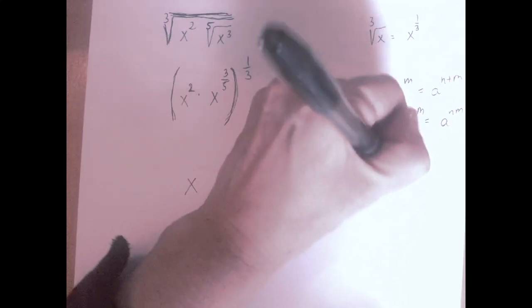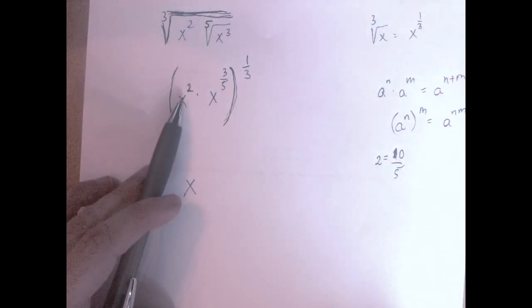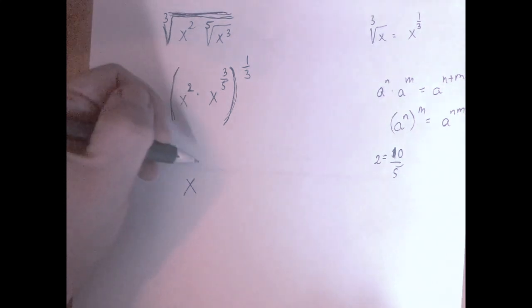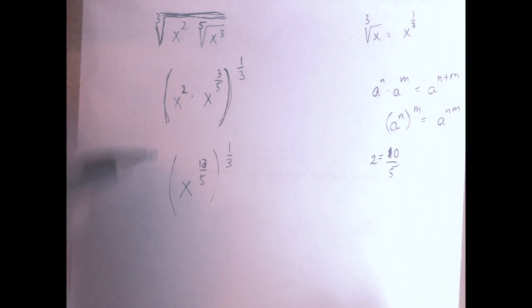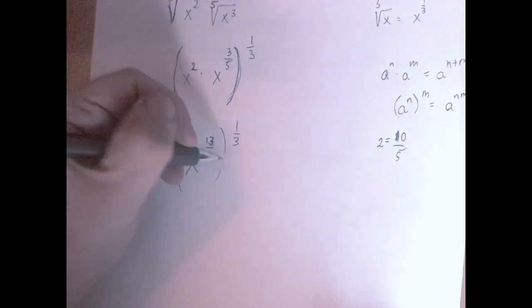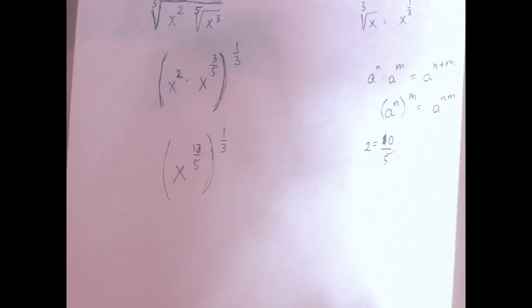Notice that 2 is the same as 10 over 5, so we're adding 10 over 5 plus 3 over 5, that's 13 over 5, and that whole thing is raised to the 1/3rd power, which means we multiply the exponents using this rule.